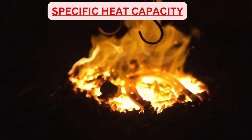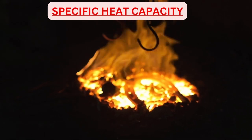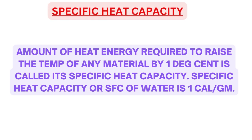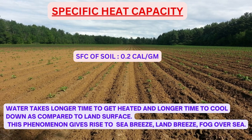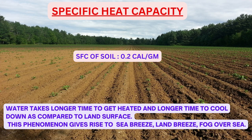Specific heat capacity: To raise the temperature of any material, we need to supply heat energy to it. The amount of heat energy required to raise the temperature of any material by 1 degree centigrade is called its specific heat capacity. Specific heat capacity of water is 1 calorie per gram, meaning 1 calorie is required to raise the temperature of 1 gram of water by 1 degree centigrade. Specific heat capacity of soil is 0.2 calories per gram — it requires 5 times more energy to raise the temperature of water by 1 degree compared to soil. Therefore, water takes longer to heat up and longer to cool down compared to land, giving rise to phenomena like sea breeze, land breeze, and fog over sea.